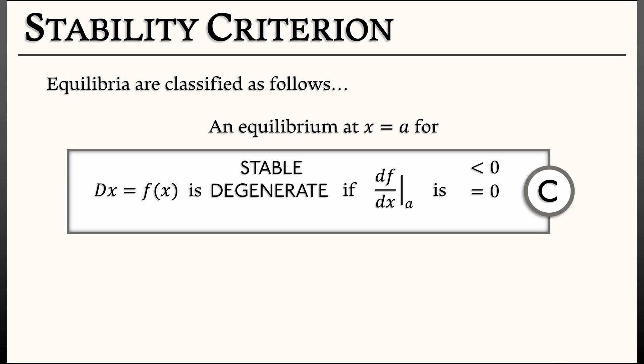If, however, your derivative at the equilibrium is positive, then you have an unstable equilibrium. Why? Because e to the lambda t is growing exponentially when lambda is positive. Okay, that's the continuous time stability criterion.